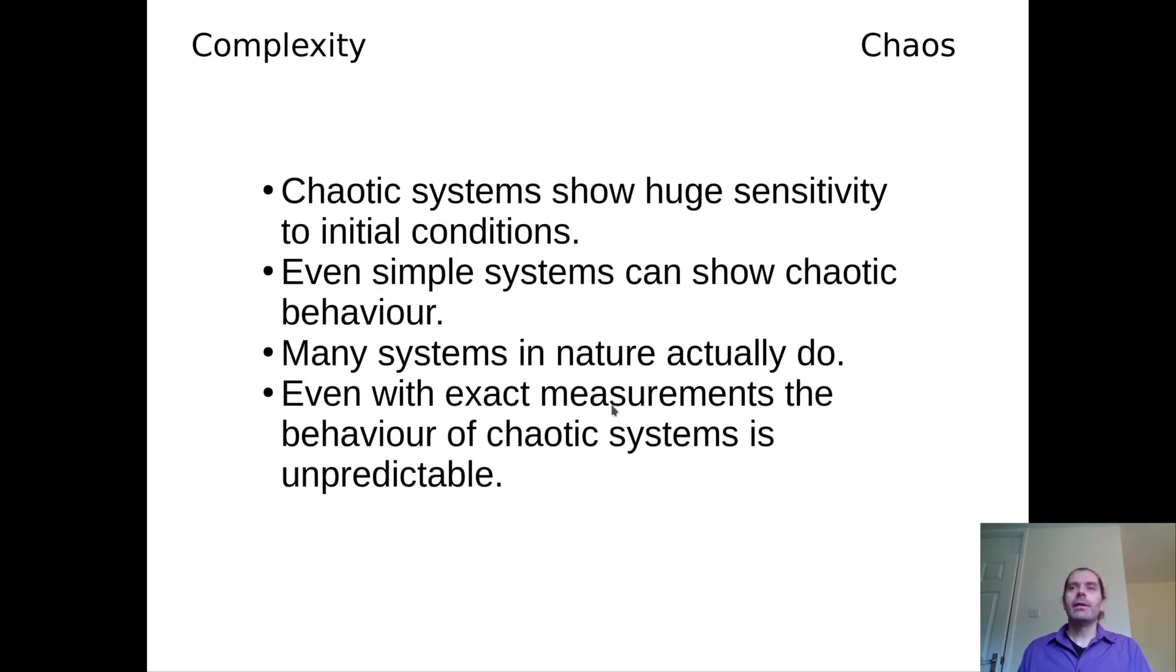So to sum up, a system is chaotic when it shows huge sensitivity to initial conditions, at least in some parts of its behavior. This can occur even in very simple systems. And many systems in nature actually are chaotic. So this is not a rare occurrence. And that essentially means that for these systems, even if we have extremely exact measurements of the current state, the behavior in the future very quickly becomes unpredictable.